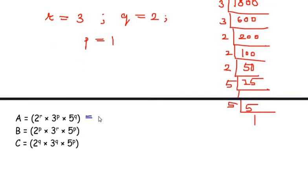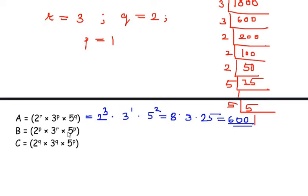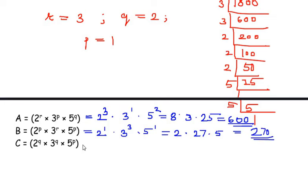For a: 2^r × 3^p × 5^q = 2³ × 3¹ × 5² = 8 × 3 × 25 = 600. For b: 2^p × 3^r × 5^p = 2¹ × 3³ × 5¹ = 2 × 27 × 5 = 270. For c: 2^q × 3^q × 5^p = 2² × 3² × 5¹ = 4 × 9 × 5 = 180. So the values are a = 600, b = 270 and c = 180.